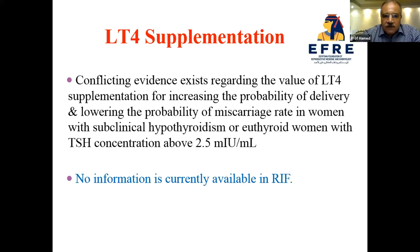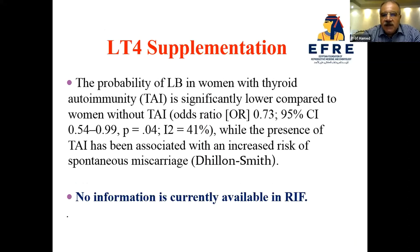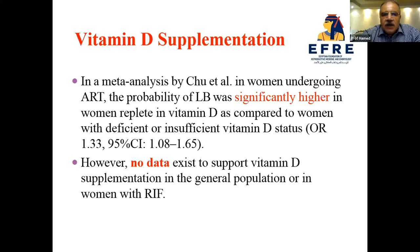No information is currently available regarding thyroxine supplementation in RIF. The probability of live birth in women with thyroid autoimmunity is significantly lower compared to women without thyroid autoimmunity, and again no specific information is available in RIF. Regarding vitamin D supplementation, in a meta-analysis of women undergoing ART, the probability of live birth was significantly higher in vitamin D replete women compared to those with deficient levels. However, no data supports vitamin D supplementation in the general population or in women with RIF.